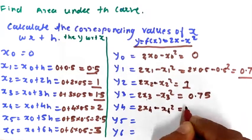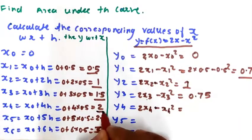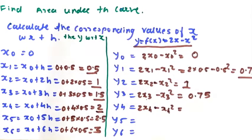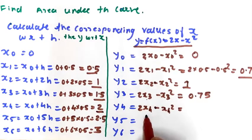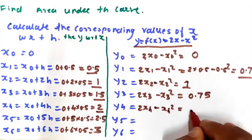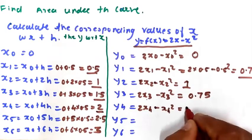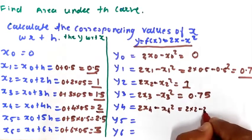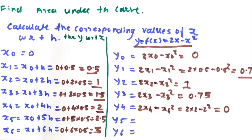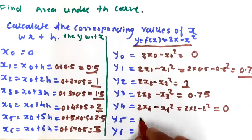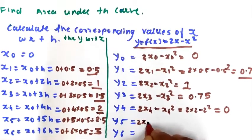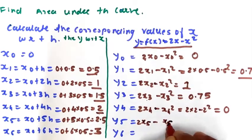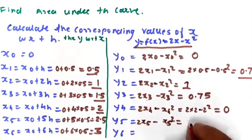For y4, substituting x4 = 2: y4 = 2×2 minus 2 squared = 4 minus 4 = 0.